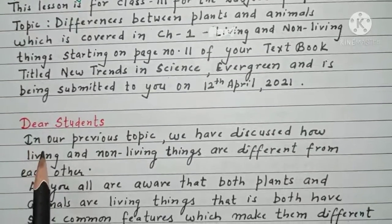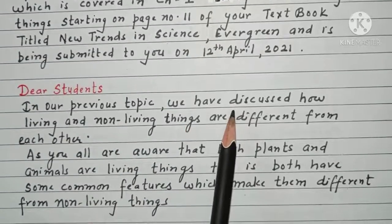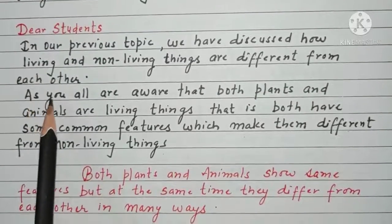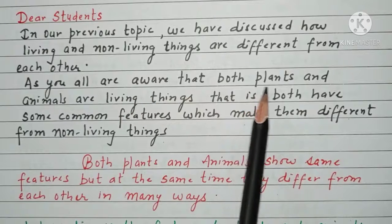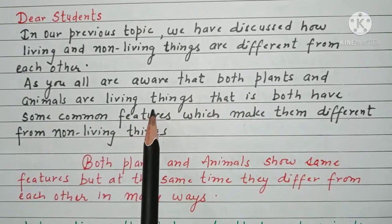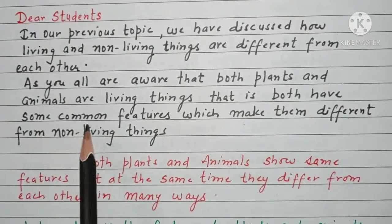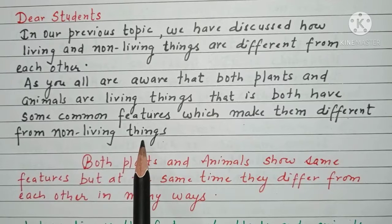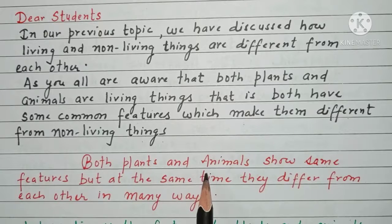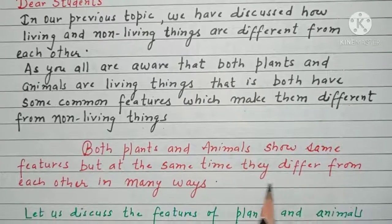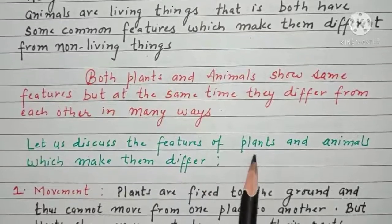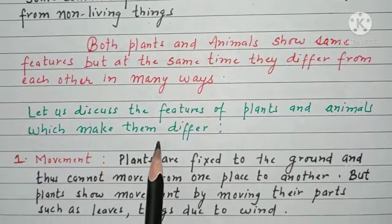Dear students, in our previous lesson we have discussed how living and non-living things are different from each other. As you all are aware, both plants and animals are living things — both have some common features which make them different from non-living things. Both plants and animals show the same features, but at the same time they differ from each other in many ways. Let us discuss the features of plants and animals which make them look different.